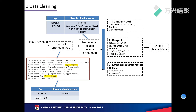The first procedure is data cleaning. First, I input raw data. And then, I find out error data types. Next, I remove or replace outliers with three methods, such as count/sort, boxplot, and standard deviation. Finally, I output the clean data.